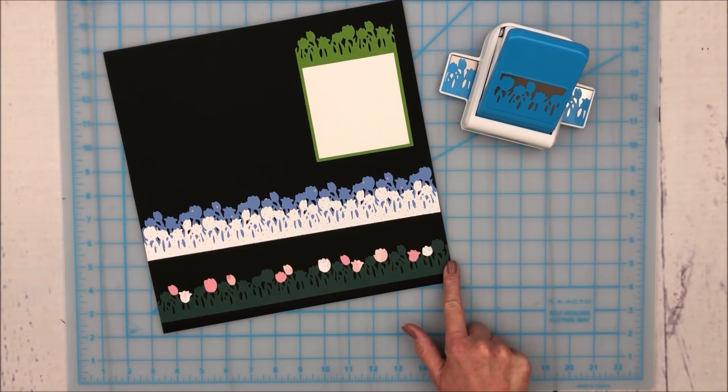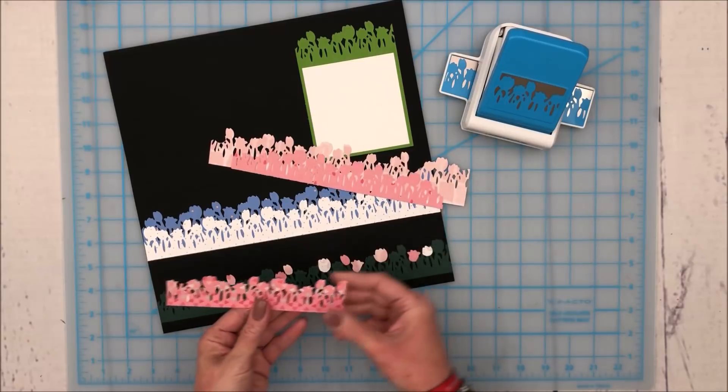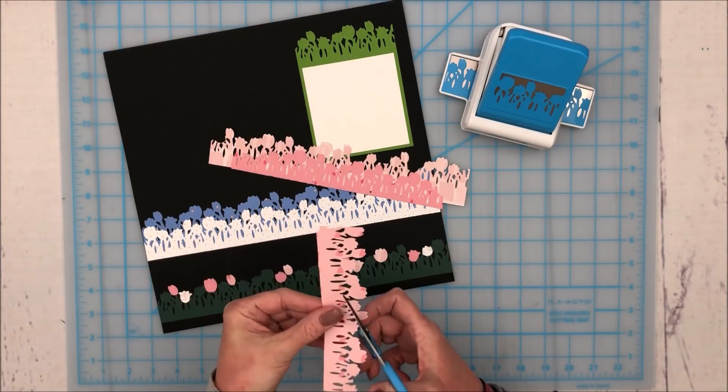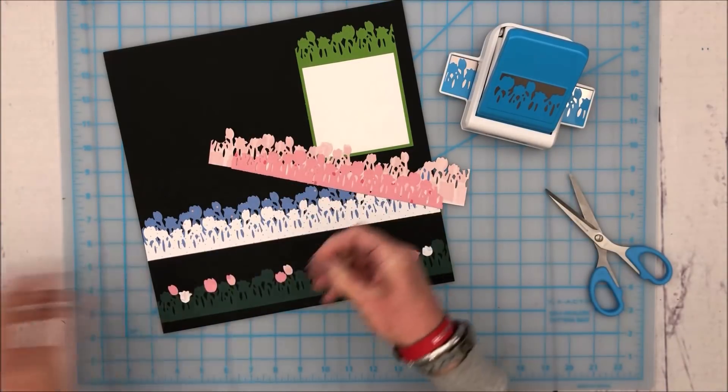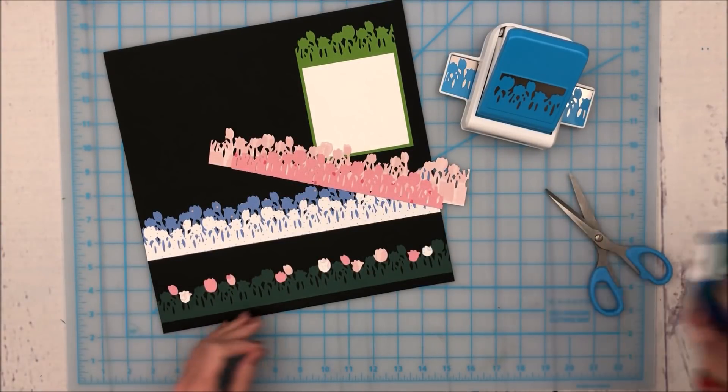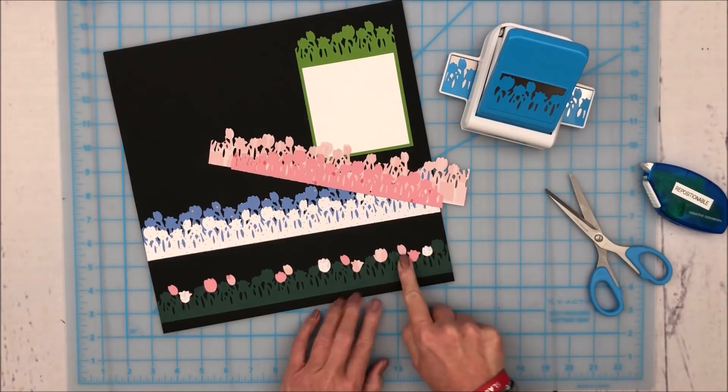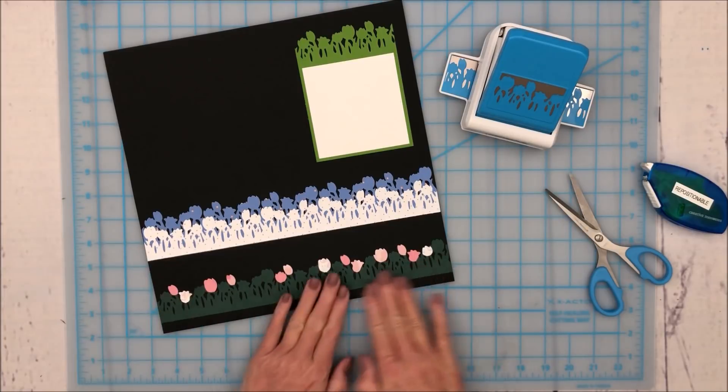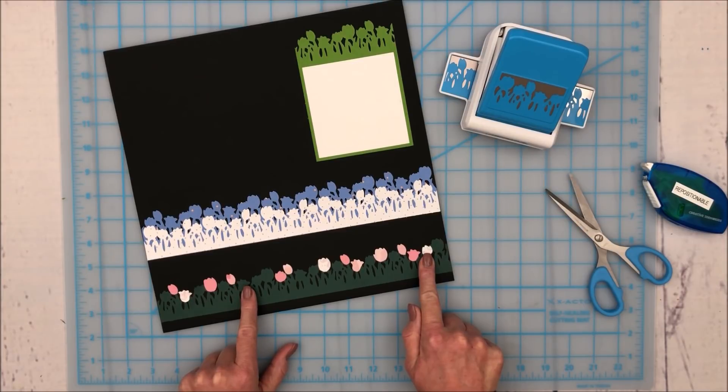For this border down at the bottom, I've simply punched one strip out of the dark evergreen, and then I punched several strips out of different pink papers from the blend and bloom collection. All I'm going to do is trim off some of the little individual flowers and use my repositionable adhesive, and I can simply add my little flowers right on top of the green border, so that all of a sudden I have a lovely grassy green or leafy green border with a variety of different colored tulips on the top.